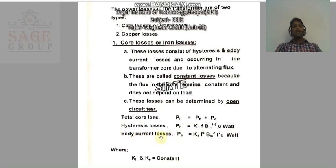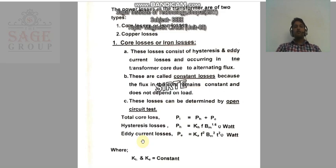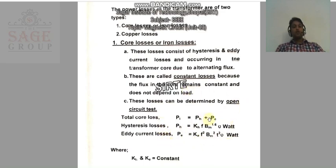Before understanding eddy current loss, we first need to understand what eddy current is. When you supply voltage in the primary winding, a current starts flowing in the primary winding, due to which flux is induced. Some part of that primary winding flux is linked with the core, and since the core has a circular closed path, a small amount of flux starts flowing in the core.